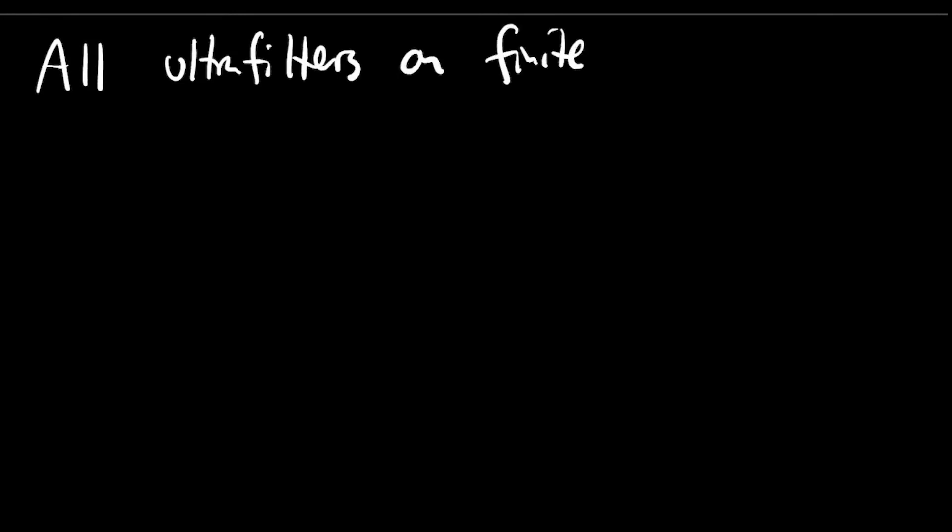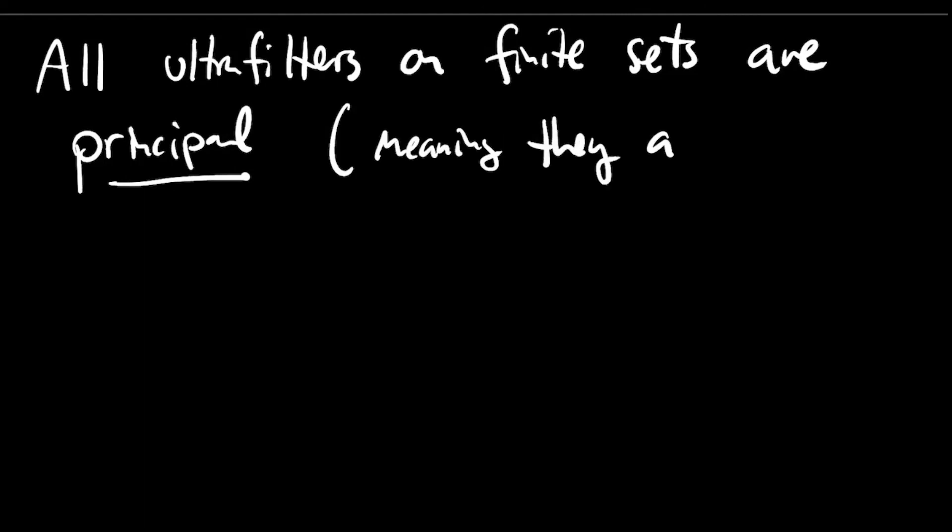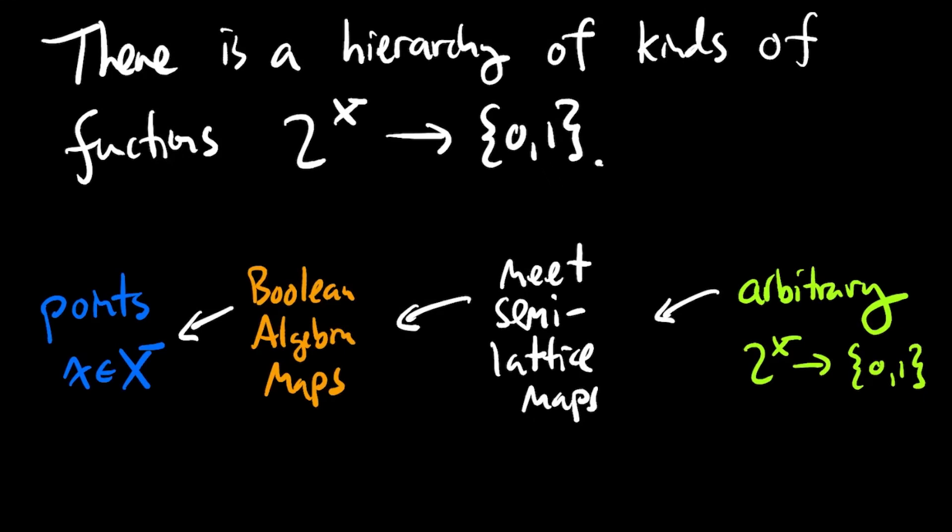Now it turns out that all ultra filters on finite sets, or even more generally, any ultra filter that contains a finite set must be principle, meaning it must be of the form that corresponds to a point. Namely, there's some element, little x, and the ultra filter is the set of all sets that contain little x. So if you go back to this hierarchy, I mentioned for finite sets, Boolean algebra maps are exactly the same as points. So for finite sets, ultra filters don't provide any kind of useful generalization for points, but for infinite sets, the situation is different.